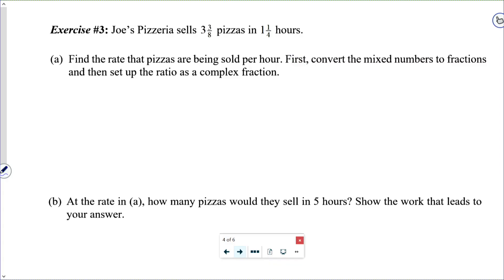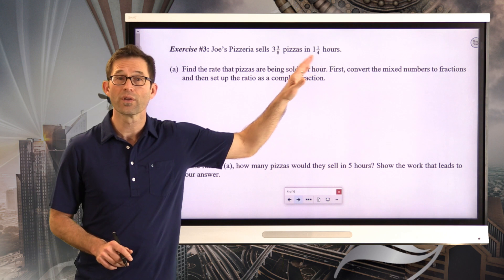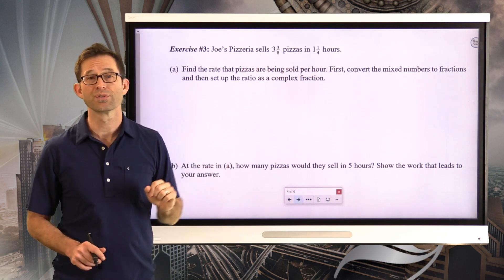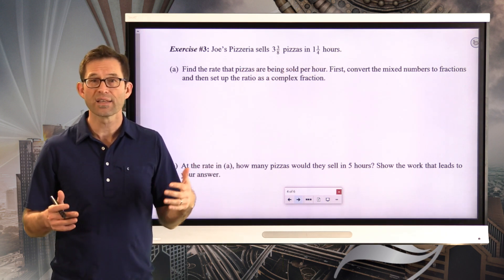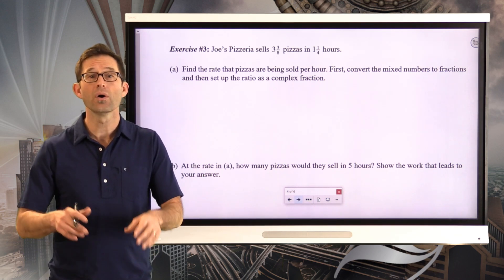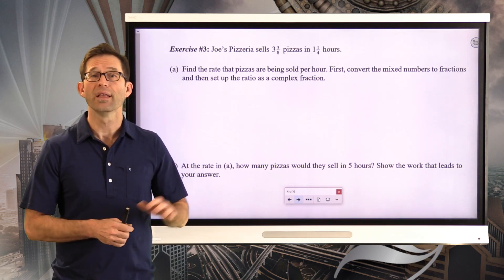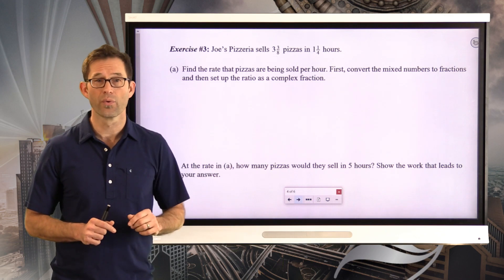Exercise number three. Joe's Pizzeria sells three and three-eighths pizzas in one and one-quarter hours. Letter A, find the rate that pizzas are being sold per hour. First, convert the mixed numbers to fractions, then set up the ratio as a complex fraction. We should all feel very, very comfortable with how to convert mixed numbers into improper fractions, because that's what we really have got to have. Then we can set up that ratio, simplify it, et cetera. I'd like you to pause the video right now and see how far you can get through letter A.